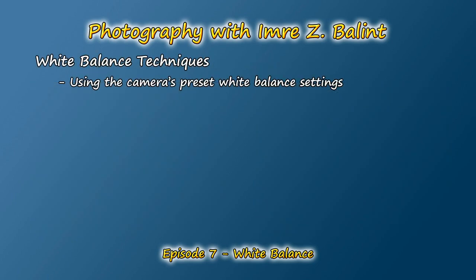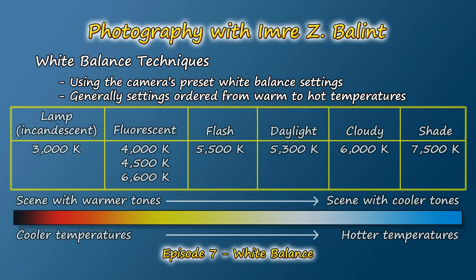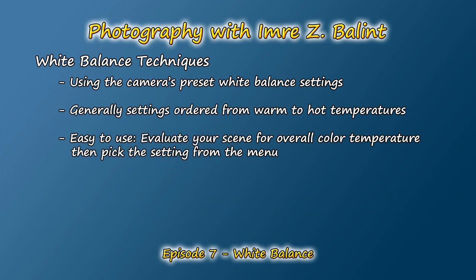Lucky for us, there are some easy techniques to correct and even prevent such color casts. Let's first start with the camera's preset white balance settings. Depending on the camera make or model, you may see some slight differences. Usually these presets are ordered from warm to hot color temperature. Here are the settings on my Olympus E3 and their associated color temperatures: lamp at 3,000 Kelvin for incandescent lighting; three fluorescent settings at 4,000, 4,500, and 6,600 Kelvin; flash at 5,500 Kelvin; and three outdoor settings — daylight, cloudy, and shade — at 5,300, 6,000, and 7,500 Kelvin respectively. To use these presets, evaluate the scene and pick the most appropriate setting, reducing the chance your camera will miscalculate and leave you with a poorly hued photo.